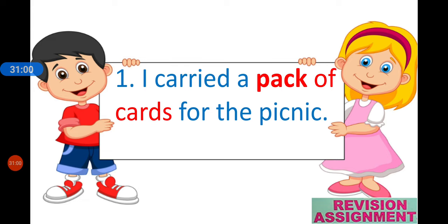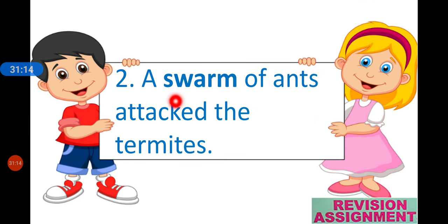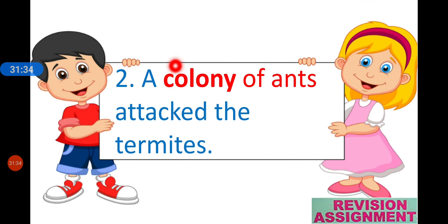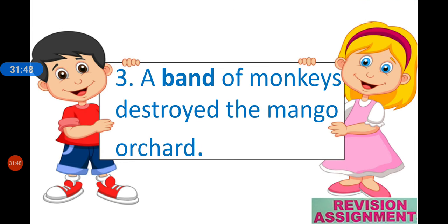Next: 'A swarm of ants attacked the termites.' Swarm is not correct for ants. The correct collective nouns for ants are 'a colony of ants' or 'an army of ants.' Both are correct.